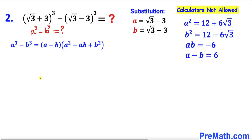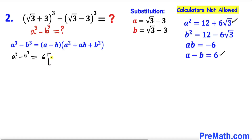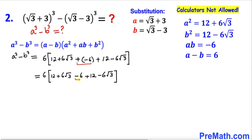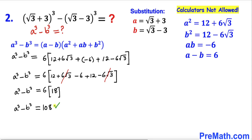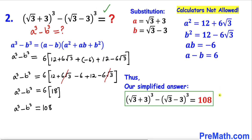Here's our final step: let's find a cubed minus b cubed by plugging in all the values. a minus b is 6, a squared is 12 plus 6 root 3, ab is negative 6, and b squared is 12 minus 6 root 3. A positive times negative 6 gives negative 6; the negative and positive cancel, and the root 3 terms cancel as well. So a cubed minus b cubed equals 108, which is our answer to question 2.